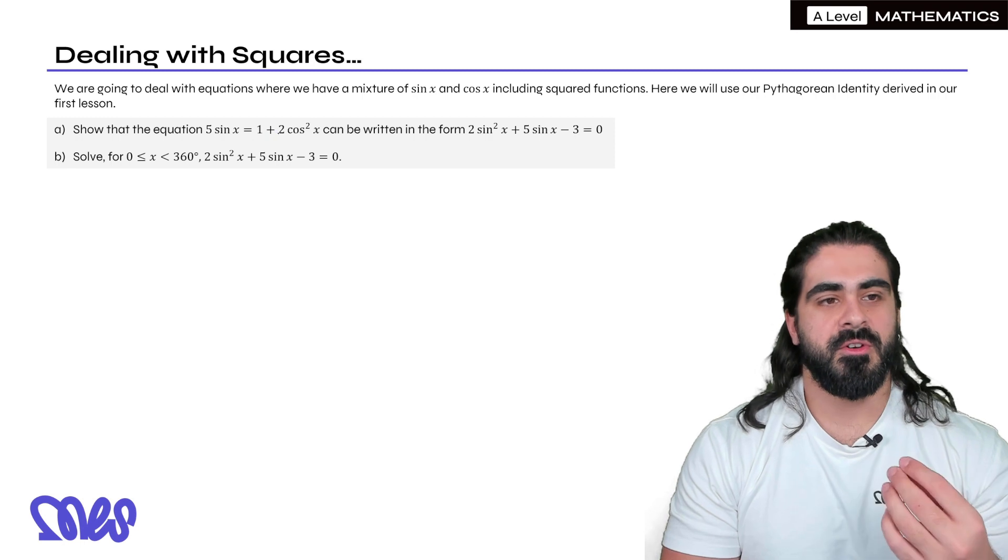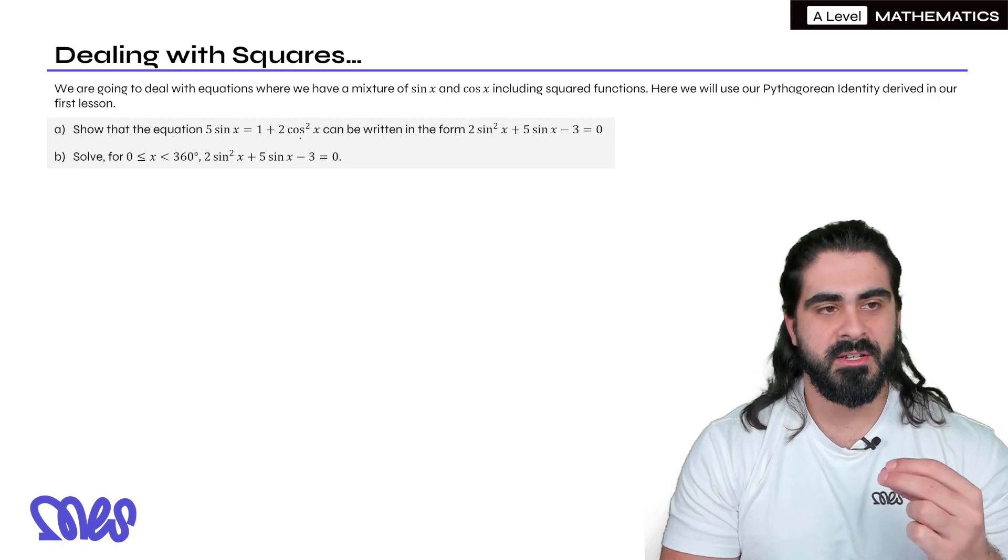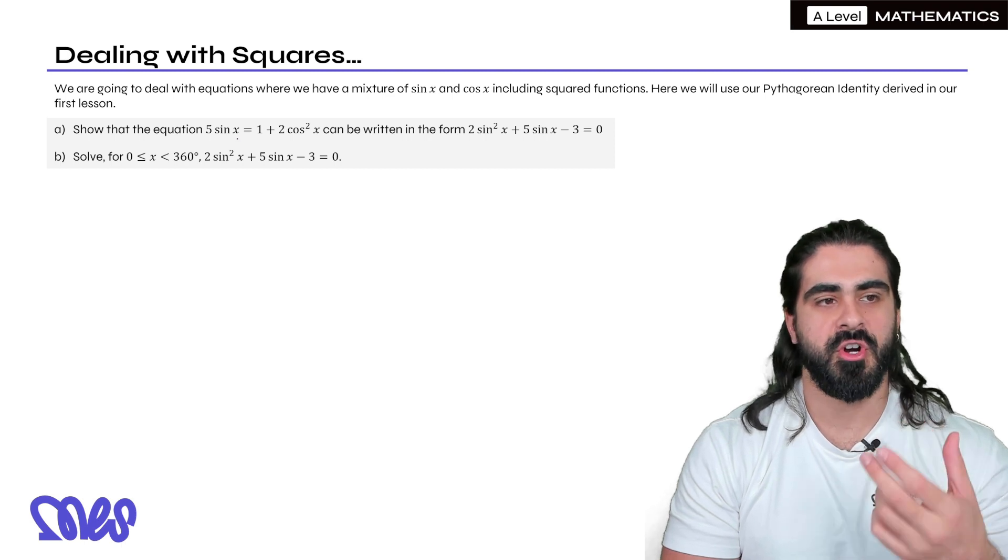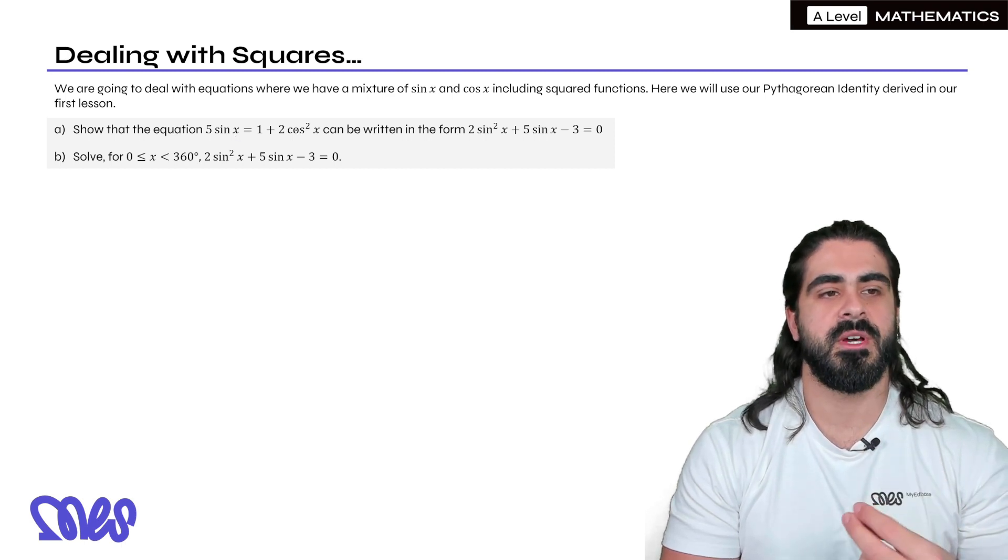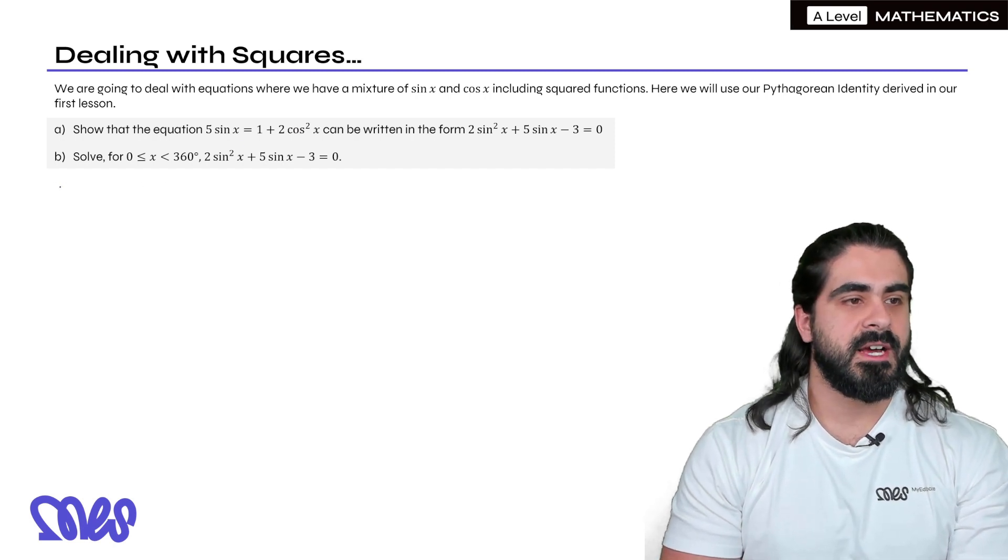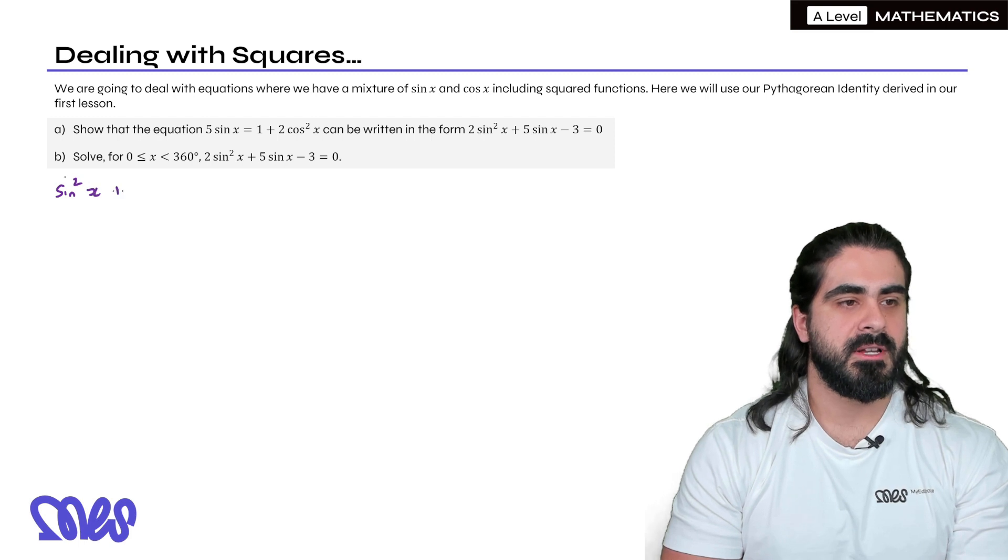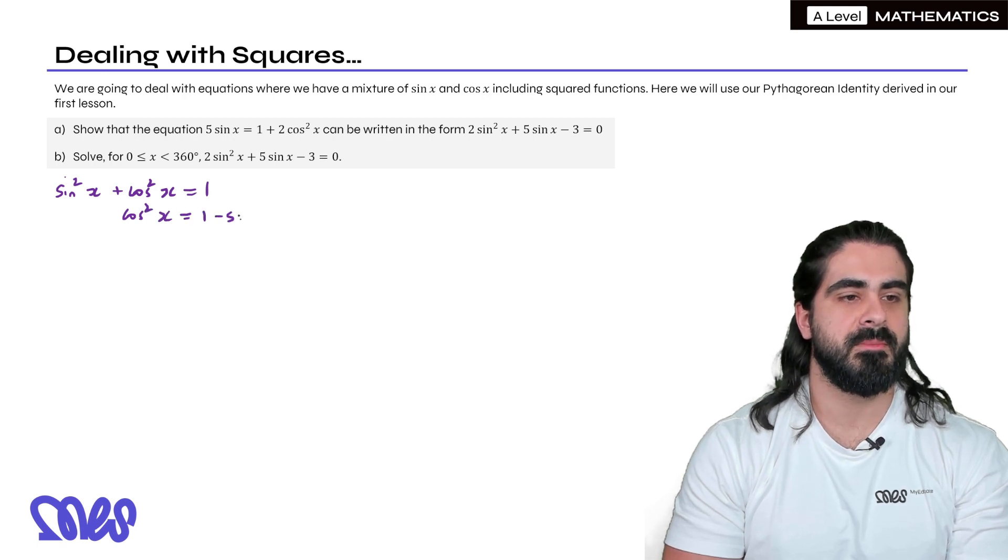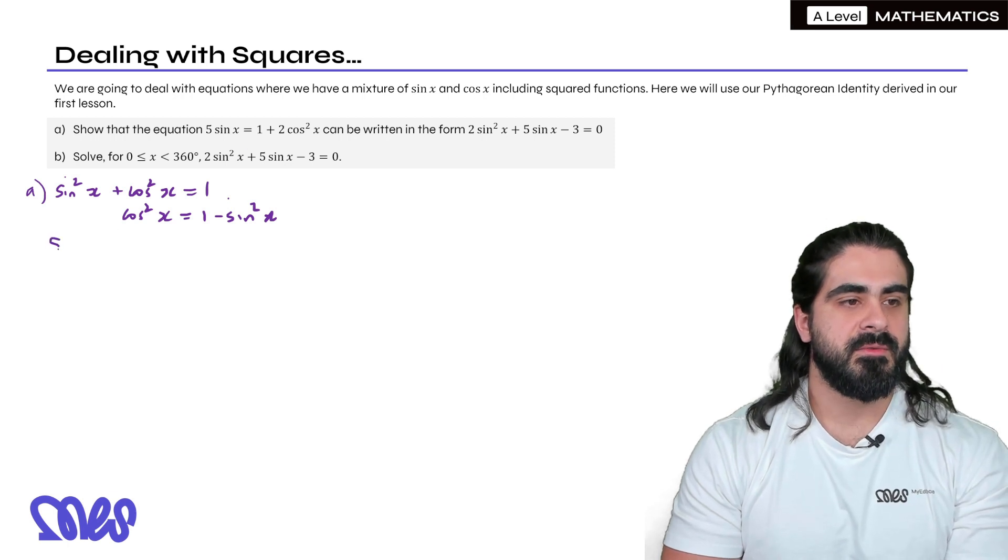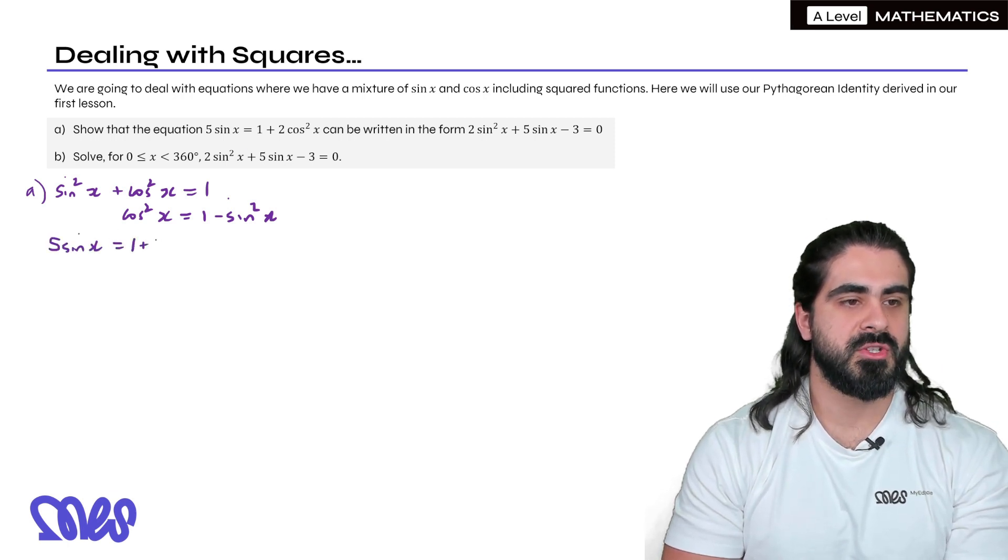The general rule you want to follow is that the term that is not squared, so here sine x, you want to convert everything into that because you can't do anything with sine x. So we're going to change cos squared into a sine function. We have sine squared x plus cos squared x equals 1. So cos squared x when we subtract sine x from both sides is 1 minus sine squared x. So we have 5 sine x equals 1 plus 2 times 1 minus sine squared x.